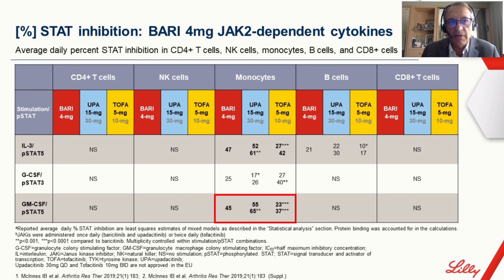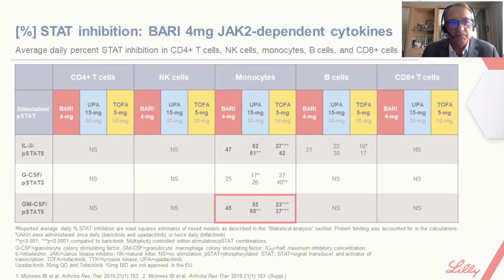In summary, not only baricitinib but also upadacitinib inhibits JAK-2 dependent cytokines. In ex vivo flow cytometry experiments, baricitinib inhibited JAK-1/3 signaling to a lesser extent than upadacitinib and tofacitinib. Baricitinib and upadacitinib were the most potent inhibitors for GM-CSF JAK-2/2 signaling, and while upadacitinib has been reported as selective for JAK-1, this data demonstrates it also has activity against JAK-2.